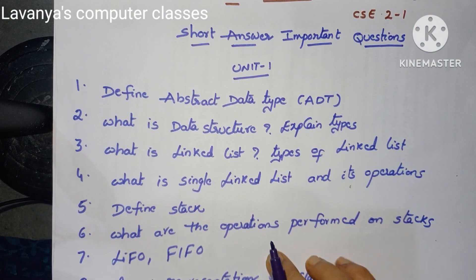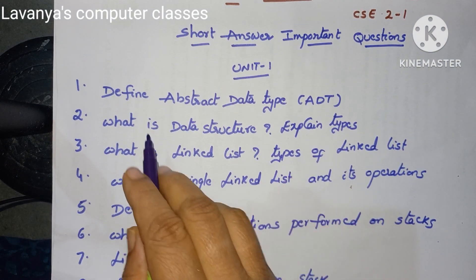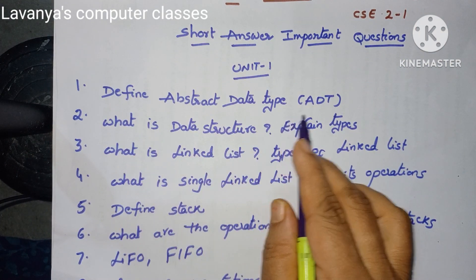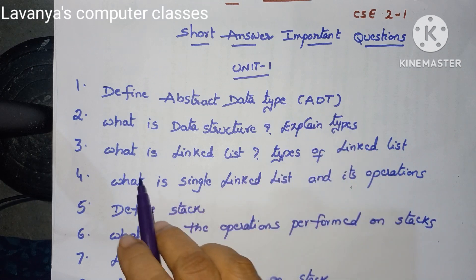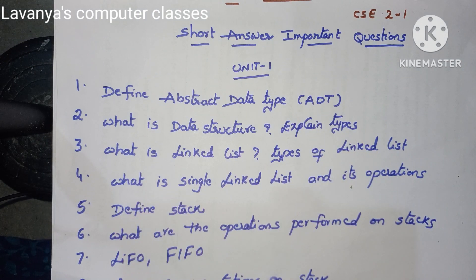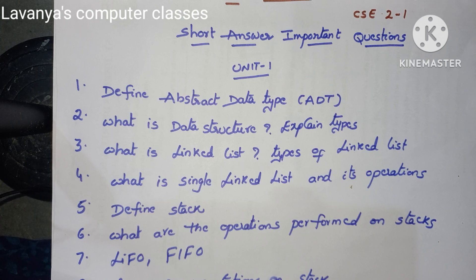Unit 1 questions include: define Abstract Data Type (ADT); what is a data structure and explain the different types of data structures; what is a linked list; and explain the different types of linked lists.